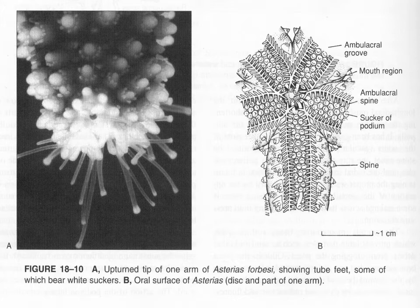If the starfish is threatened, those spines come together like gates — like if you put two combs together with the teeth overlapping, it forms a grid or gate that stops organisms from getting their teeth in to bite at the soft flesh of the tube feet within the ambulacral groove area.